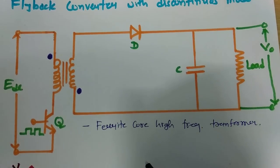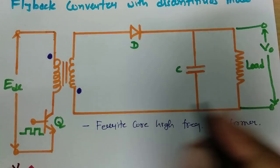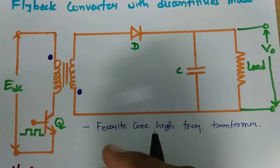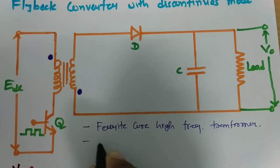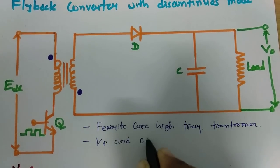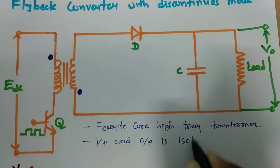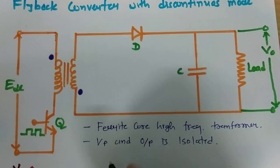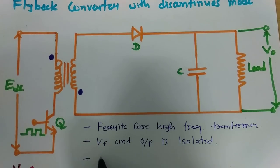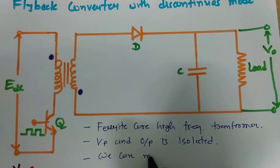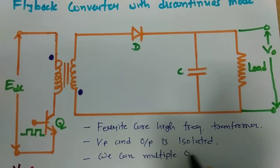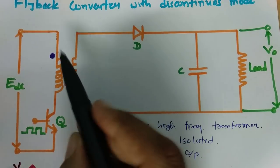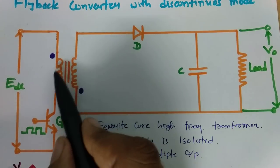This transformer provides isolation between input and output. Here we take output on one side and we have DC input on the other. Because of this transformer, we have isolation between input and output. And because of this isolation, we can have multiple outputs even.